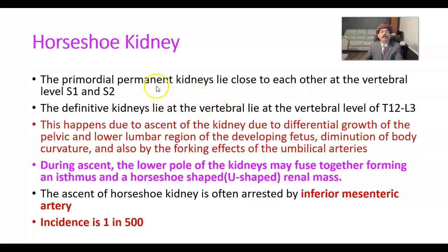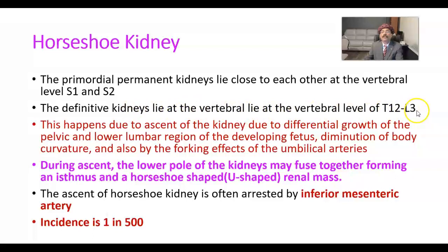The primordial permanent kidneys, that is the metanephros, lie close to each other at the vertebral level S1 and S2, on the pelvic surface. The definitive kidney lies at the vertebral level of T12 to L3. This happens due to ascent of the kidney.